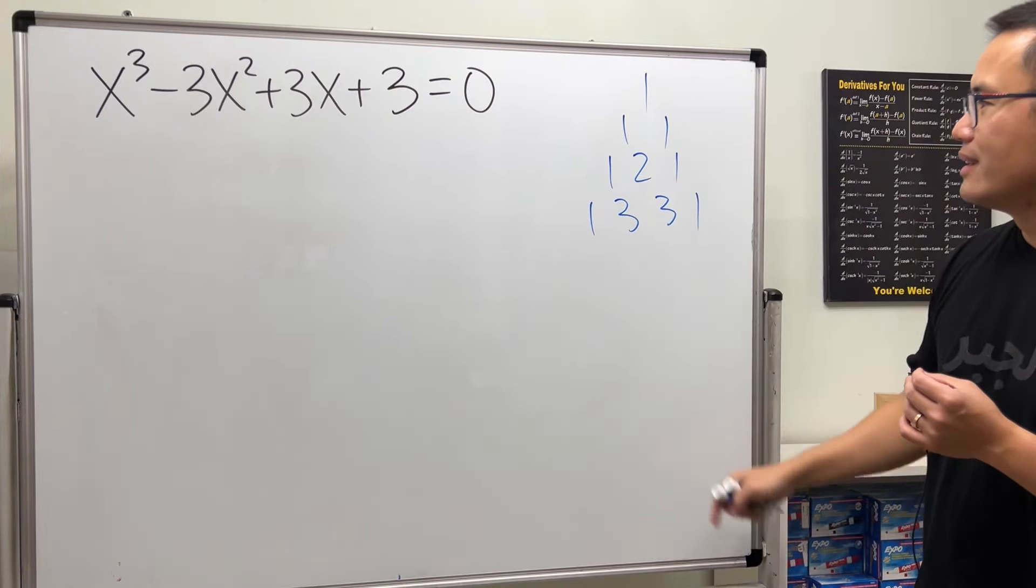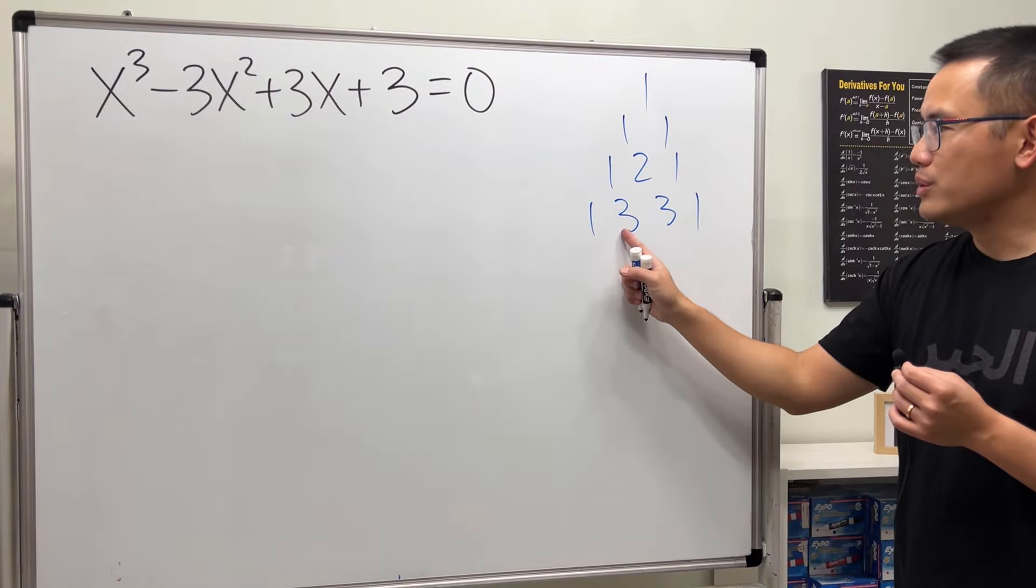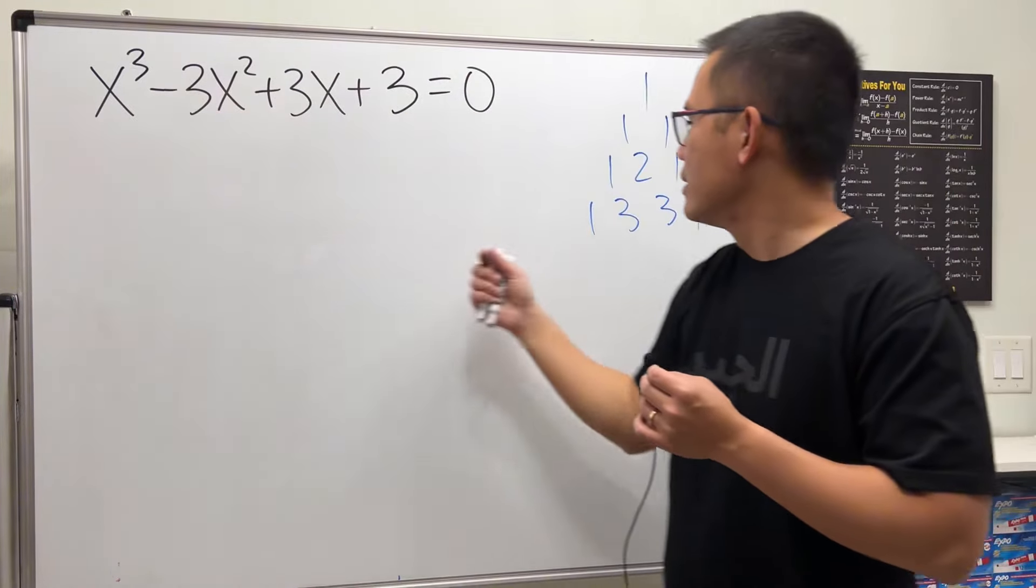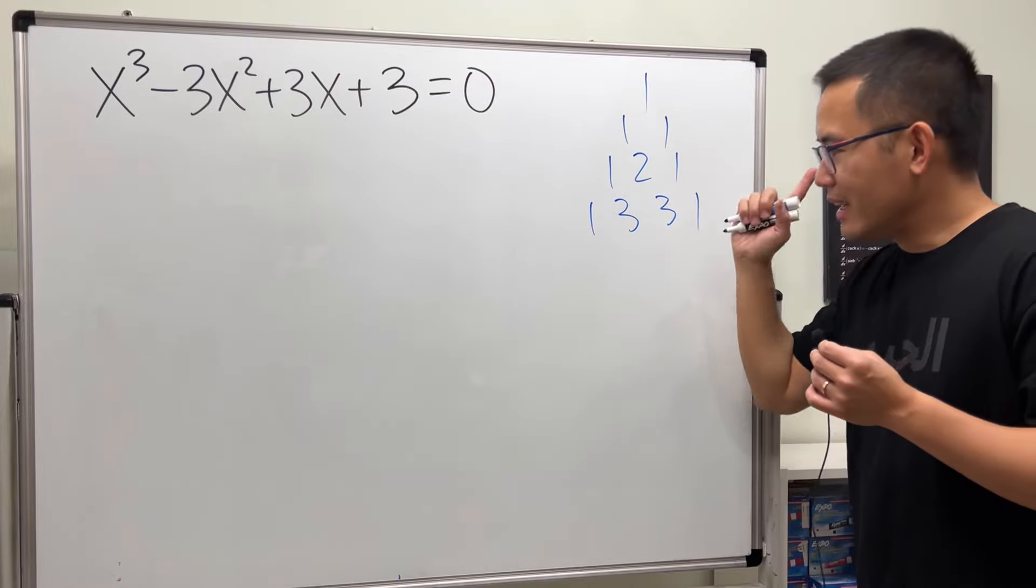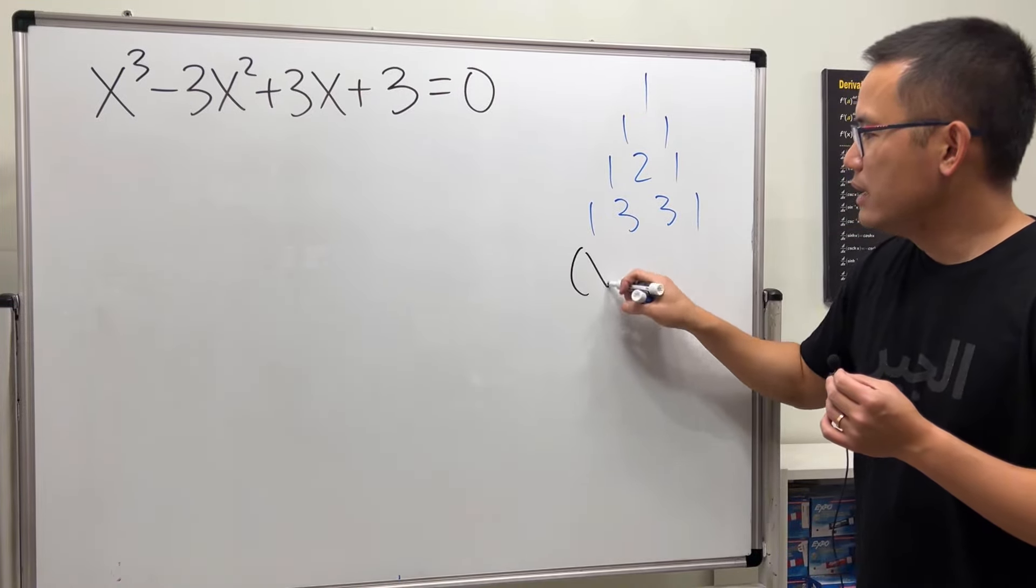You just add these two numbers to get the next one. Once you see a 3 for the third power you can stop. This tells us if we're trying to expand (x+1)³.